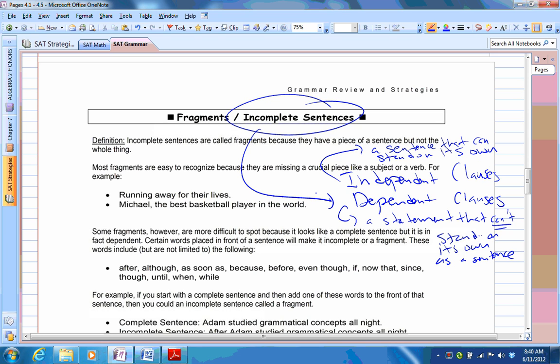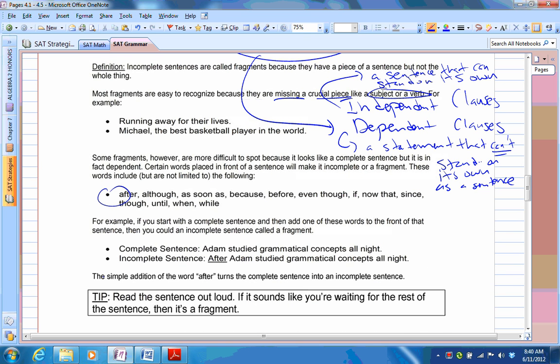So sometimes we need something to complete it. So it could be missing a crucial piece like a subject or a verb. Sometimes it can be difficult to spot. That's because they might use some of these words here, like after, although, something like that. So if we look at like here, Adam studied grammar concepts all night. Cool. After Adam studied grammar concepts all night. And it's almost like you're waiting for that person to finish his or her statement. So the word after makes a sentence a dependent clause, which is not okay. You would need to say something else then, or drop the word after. So you need to watch out for that.